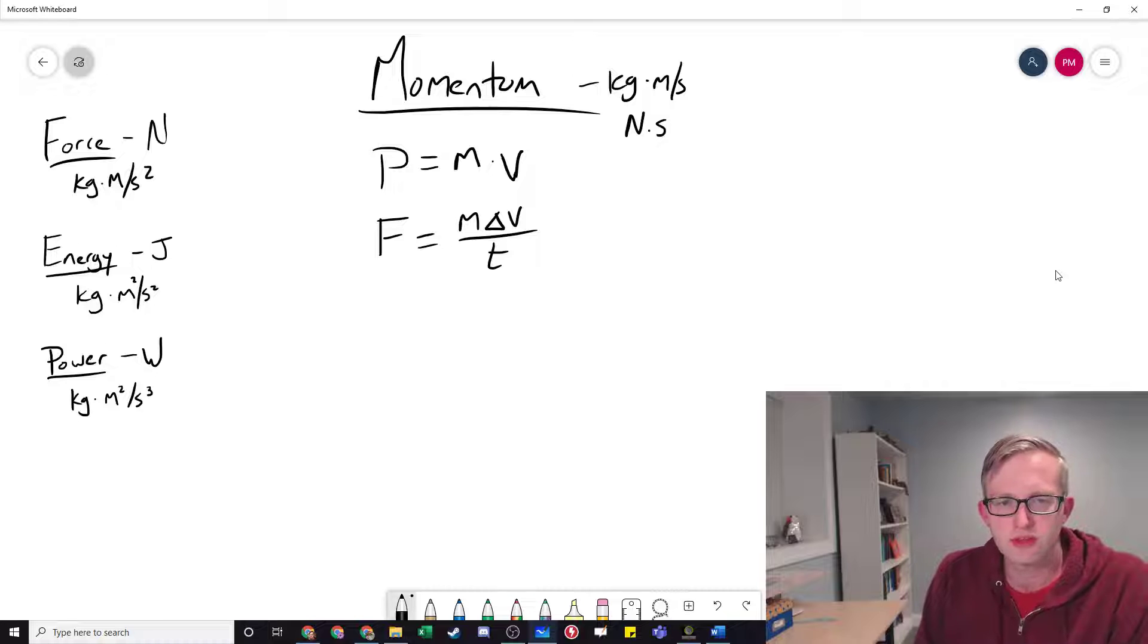The second equation was that the average force is equivalent to the change in momentum over time. I want to point out that this equation is actually Newton's second law. If we take the change in velocity over time, that represents acceleration. So we see f equals ma.